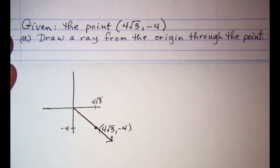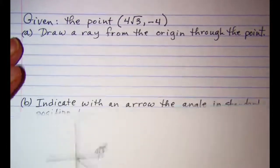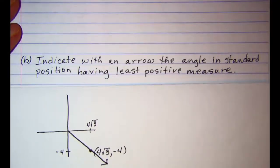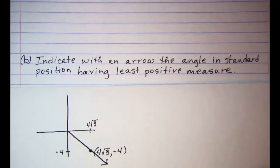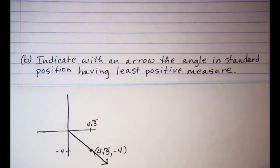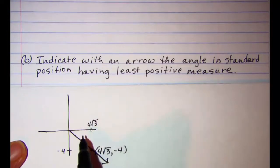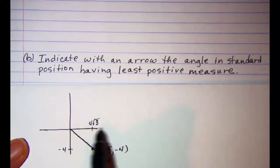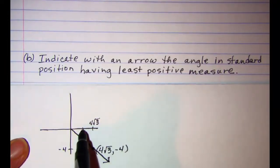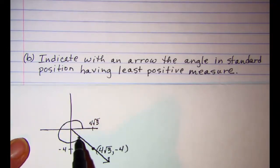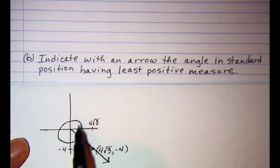Next we want to indicate with an arrow the angle in standard position having the least positive measure. For a positive angle, we start with the positive x-axis and go in a counterclockwise rotation, so our least positive measure would be shown with this arrow.